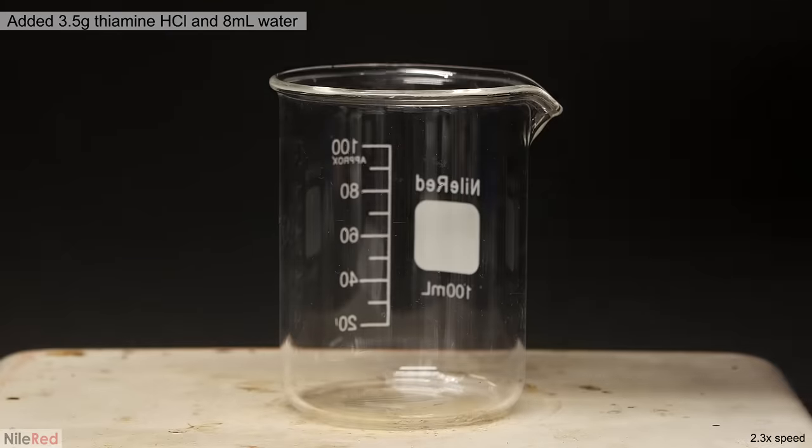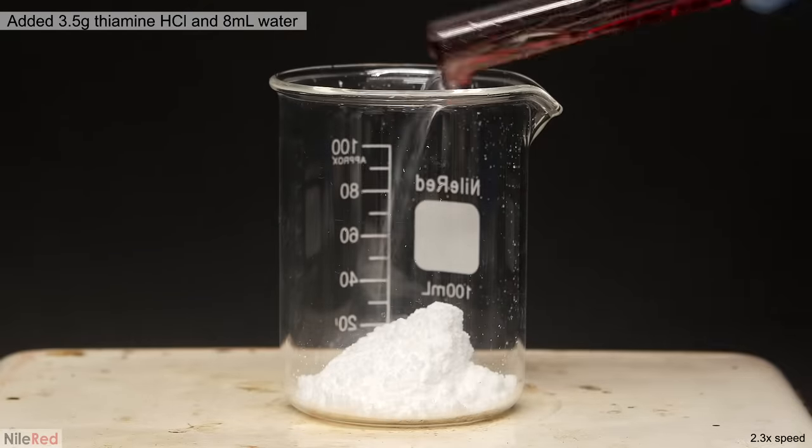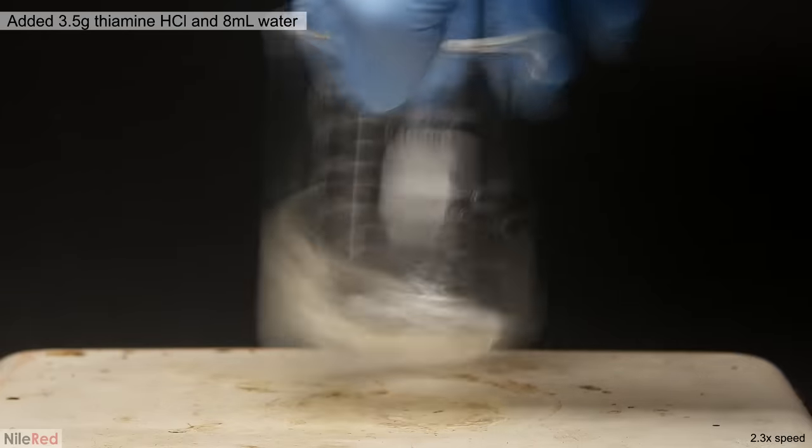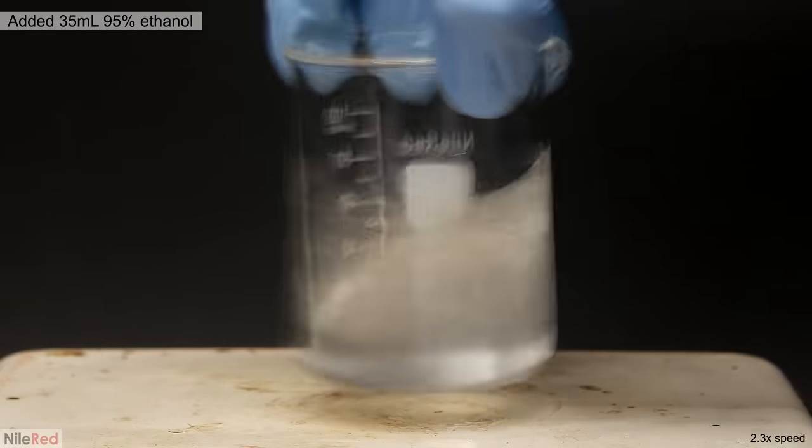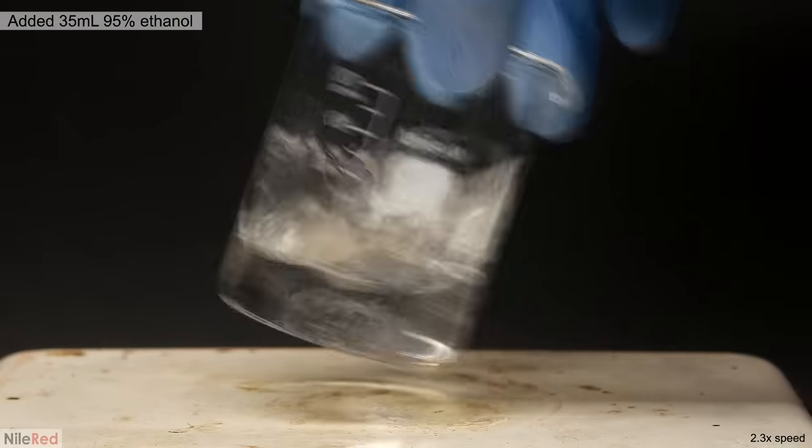For the second one, I added 3.5 grams of thiamine hydrochloride, followed by 8 mils of water. I swirled it around until it all disappeared, and then I added 35 mils of 95% ethanol.